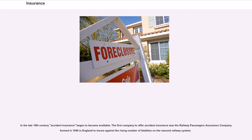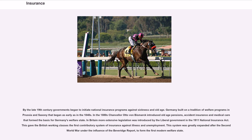In the late 19th century, accident insurance began to become available. The first company to offer accident insurance was the Railway Passengers Assurance Company, formed in 1848 in England to insure against the rising number of fatalities on the nascent railway system. By the late 19th century, governments began to initiate national insurance programs against sickness and old age. Germany built on a tradition of welfare programs in Prussia and Saxony that began as early as the 1840s. In the 1880s, Chancellor Otto von Bismarck introduced old age pensions, accident insurance, and medical care, forming the basis for Germany's welfare state. In Britain, more extensive legislation was introduced by the Liberal government in the 1911 National Insurance Act, giving the British working classes the first contributory system of insurance against illness and unemployment. This system was greatly expanded after the Second World War under the influence of the Beveridge Report, to form the first modern welfare state.